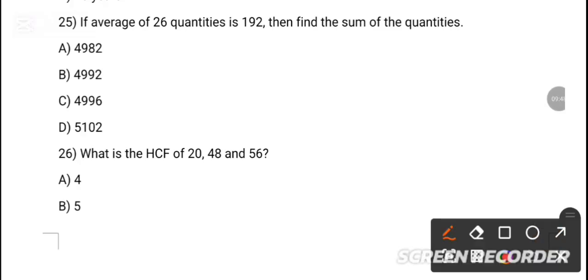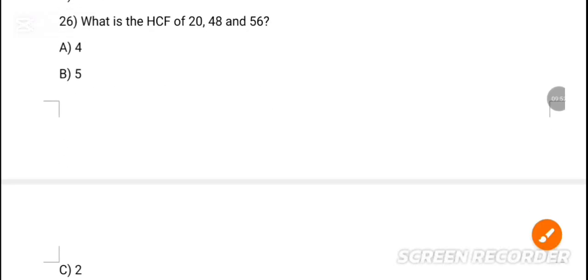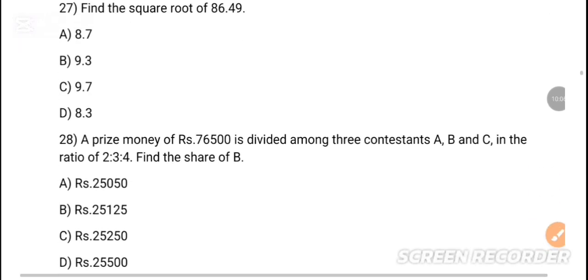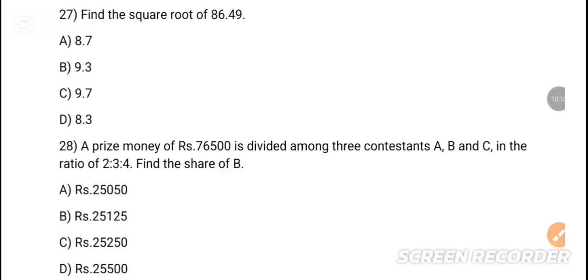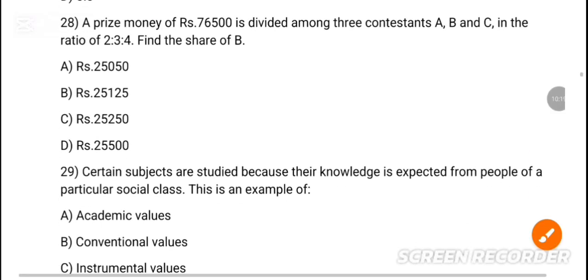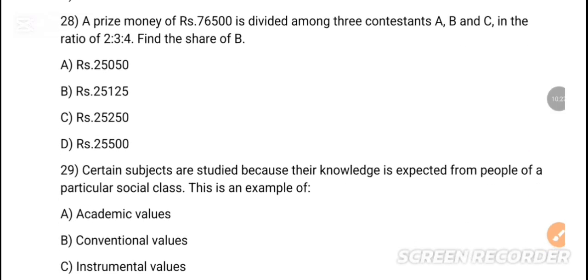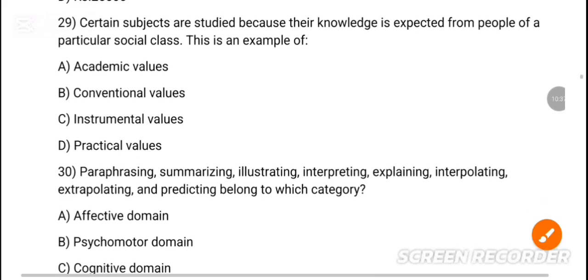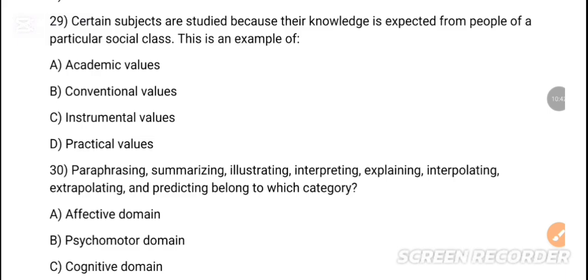MCQ 26: What is the HCF of 2048 and 56? Option A is the correct answer — 4. MCQ 27: Find the square root of 86.49. Option B is the correct answer — 9.3. MCQ 28: A prize money is divided among three contestants A, B, and C in a certain ratio.